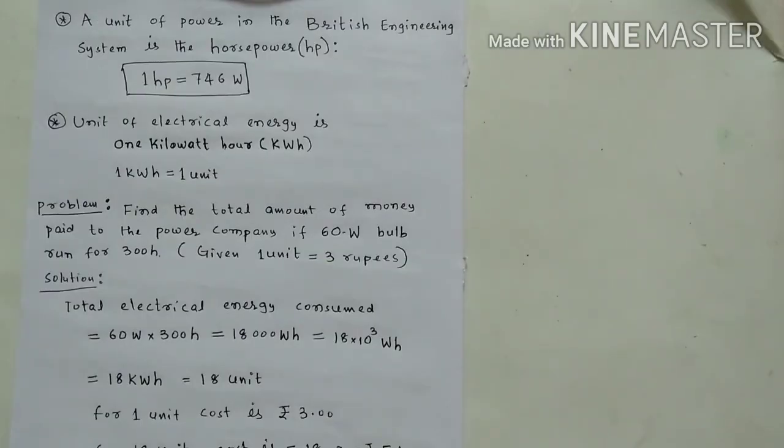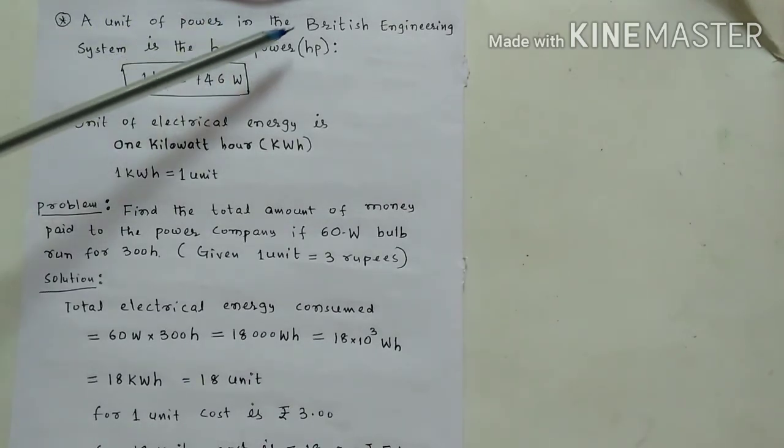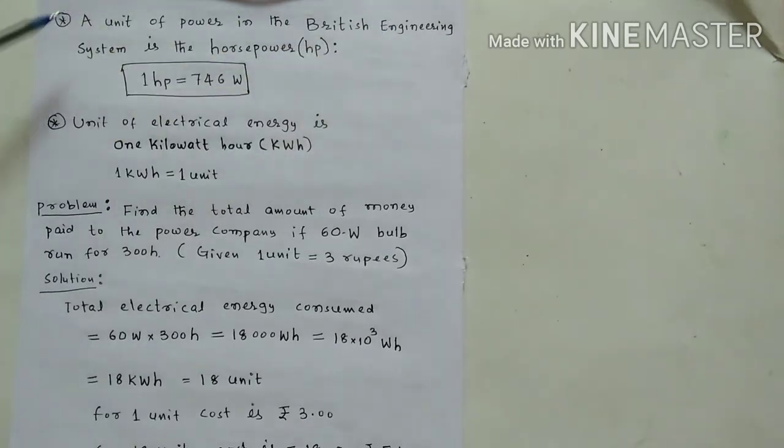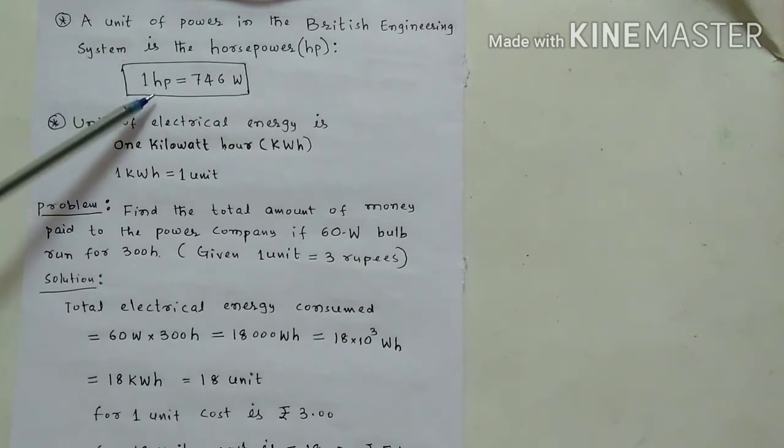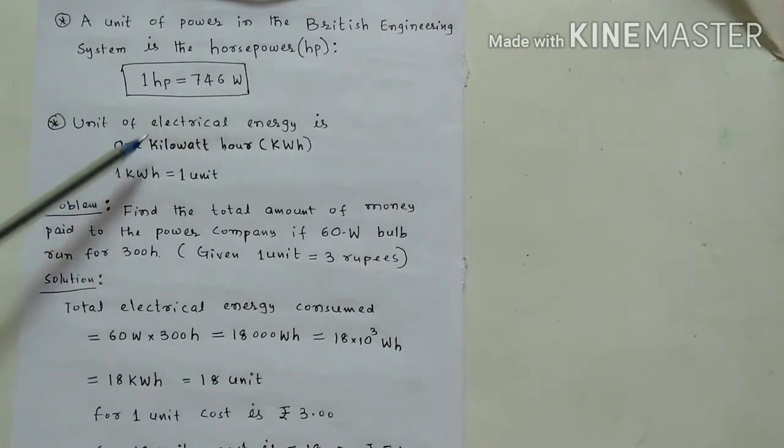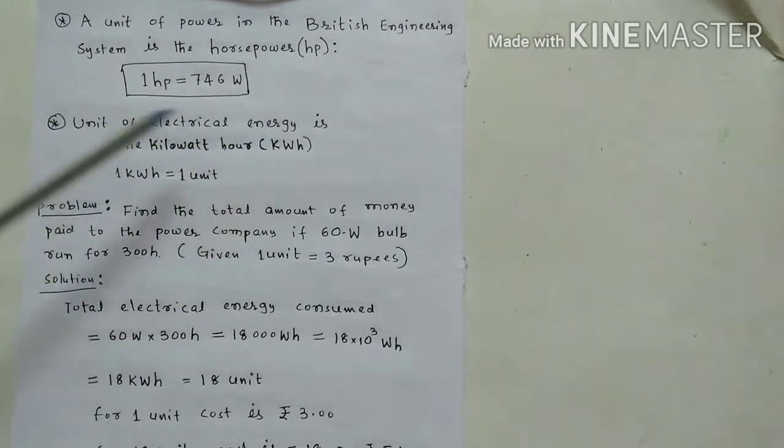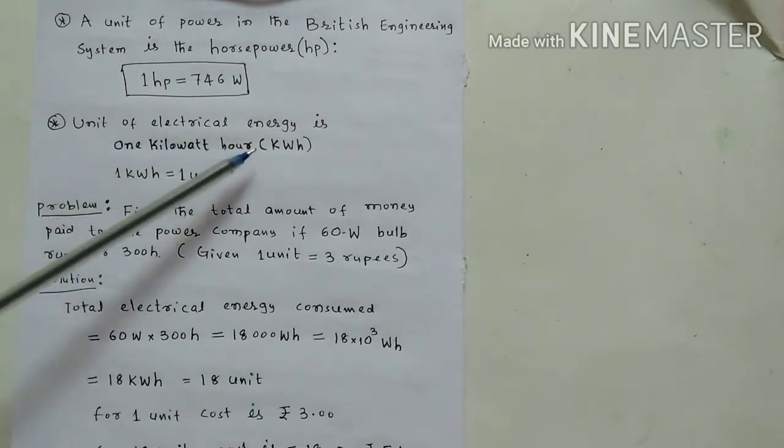Some important points I will tell you. A unit of power in the British engineering system is the horsepower, HP. One horsepower equal to 746 watt. Unit of electrical energy is one kilowatt hour. One kilowatt hour power equal to one unit.